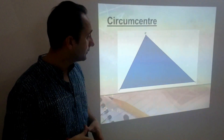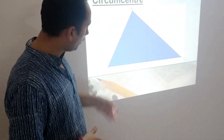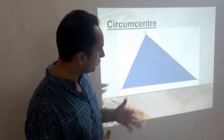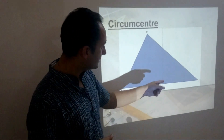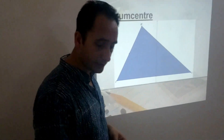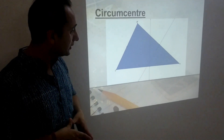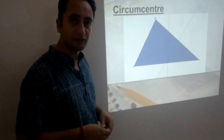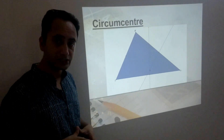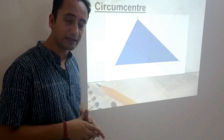Next one, Circumcenter. Now, I have taken another triangle HIJ. In this triangle, I have drawn a perpendicular bisector of side IJ. A perpendicular bisector is a line which divides another line segment into two equal parts and is perpendicular to it. Let's draw another perpendicular bisector to side HJ. Now these two perpendicular bisectors intersect at a specific point, represented by C, and this is known as the circumcenter of a triangle. Even if I draw the third perpendicular bisector, it will again intersect at point C, the circumcenter.